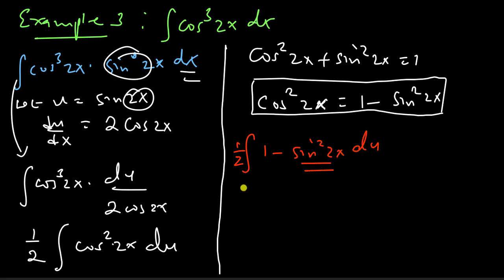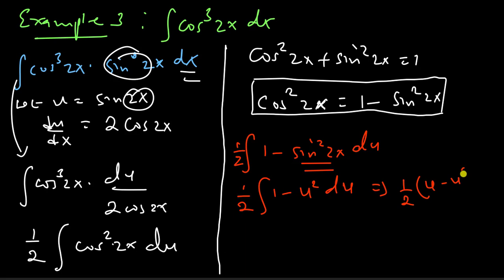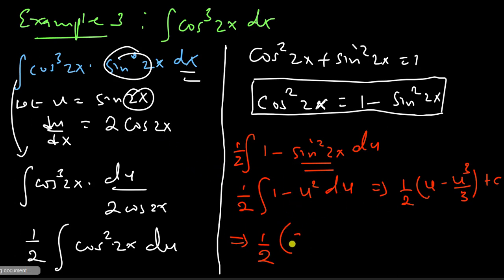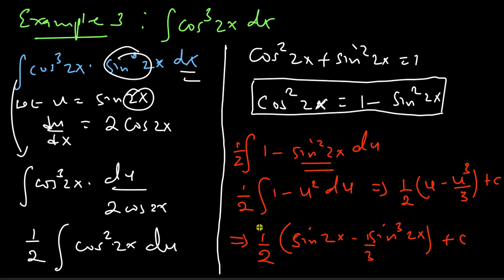Since sin(2x) = u, this becomes one-half times the integral of (1 − u²) du, which gives one-half times (u − u³/3) + C. Substituting back, our final answer is one-half times (sin(2x) − sin³(2x)/3) + C.